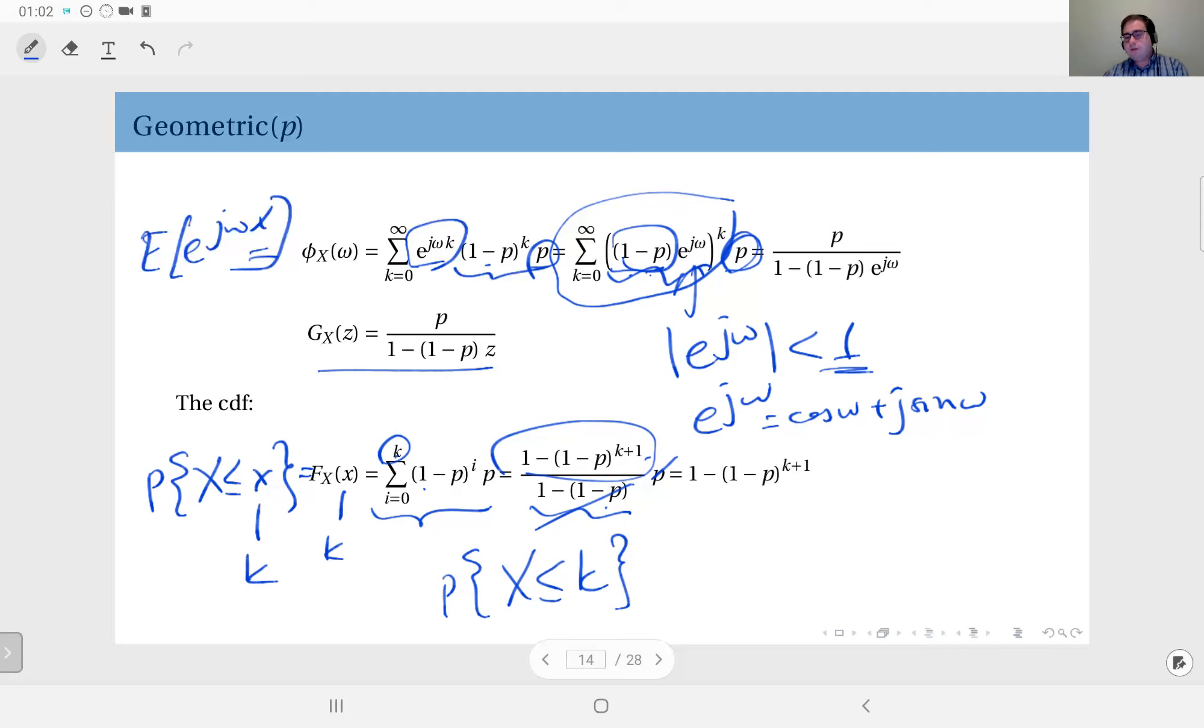Now it's easier to look at the complement of this event. So what about the probability that X is larger than k? That means the first k trials are all fails, right? 1 minus p to power k.